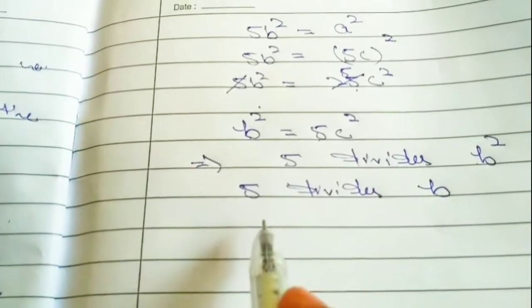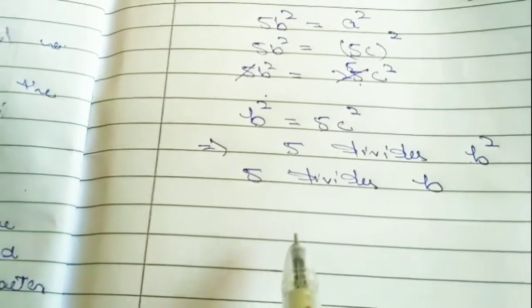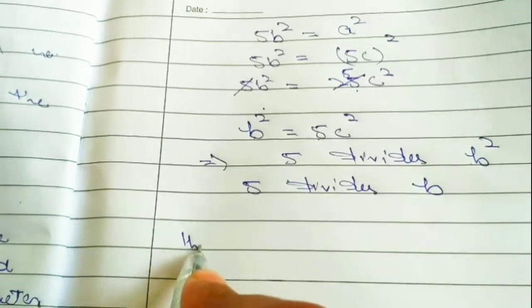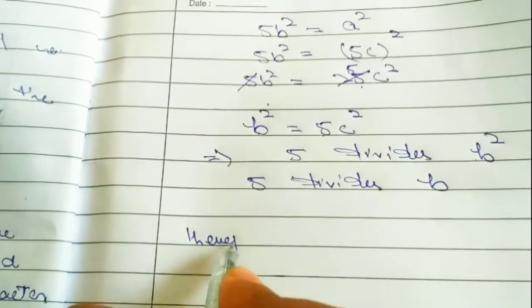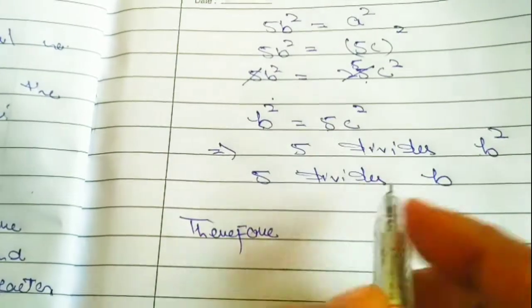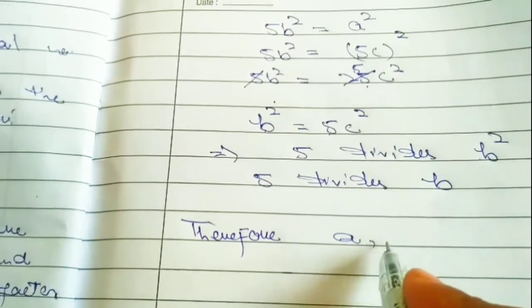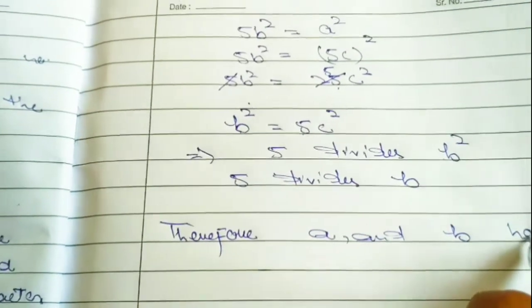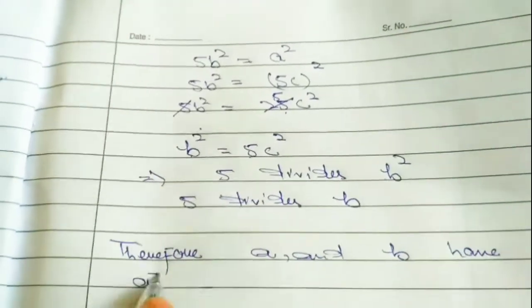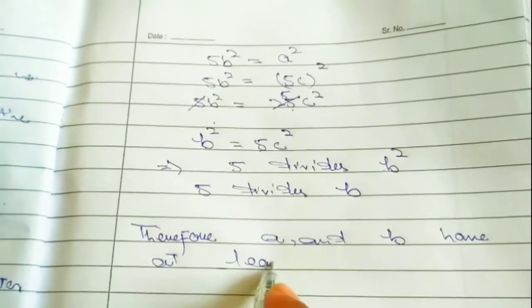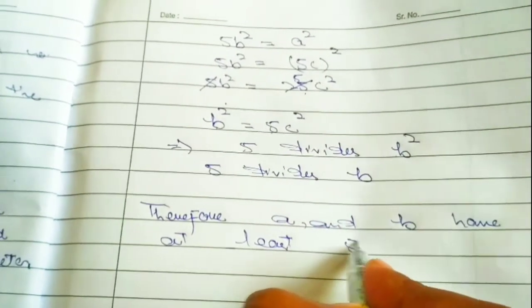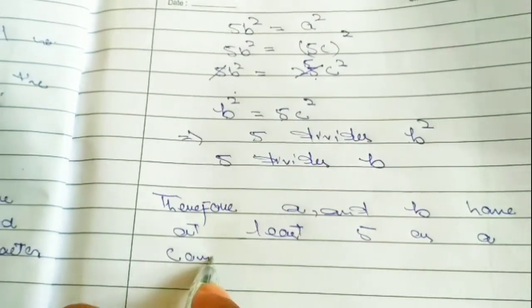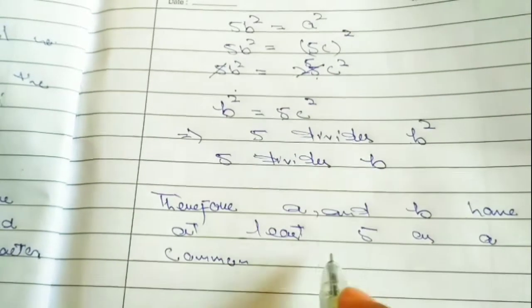So here we have 5 as a common factor of both A and B. Therefore, A and B have at least 5 as a common factor.